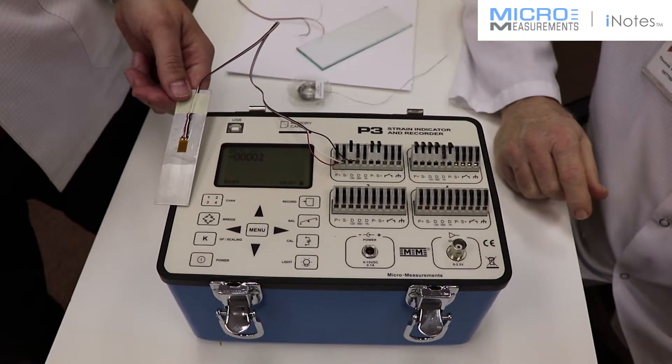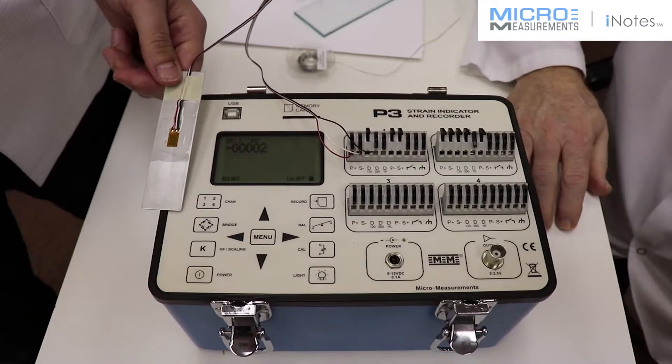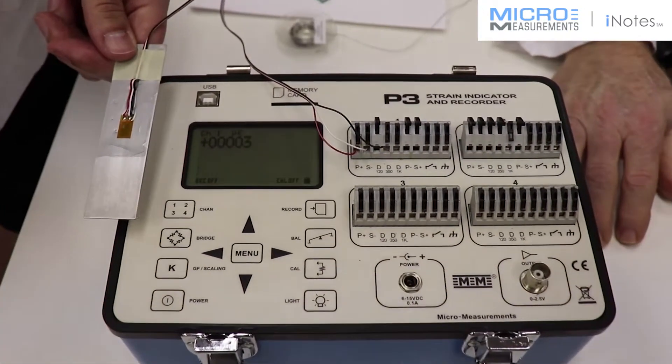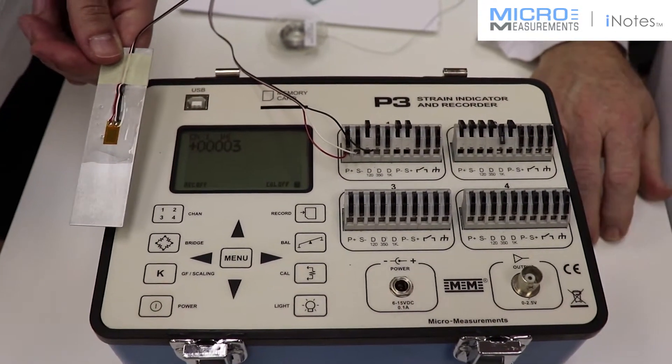So now Colin has hooked up his beam to the P3 strain indicator and recorder. It's a three-wire quarter bridge setup, a 350 ohm strain gauge, and we're going to demonstrate the stability of this advanced sensor CEA series of gauge.